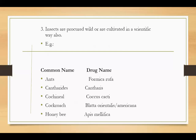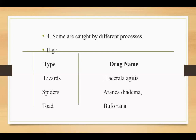Some are collected by different means. Example types: Lizard — drug name Desireta Agilites; Spiders — Arianidina; Toad — Bifurana.